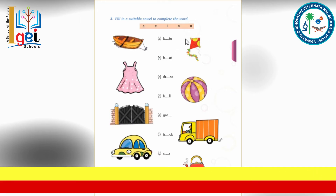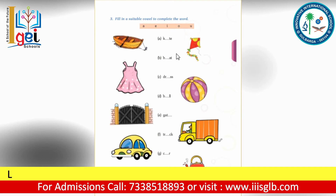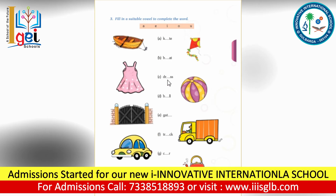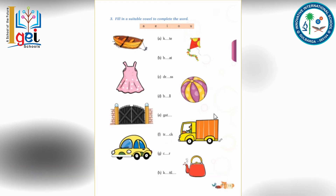This is the dress, D-R-E-double-S, dress. Next comes — what is this? This is a ball. And next — this is the gate, G-A-T-E. Next, what is this? This is a truck, T-R-U-C-K, truck.